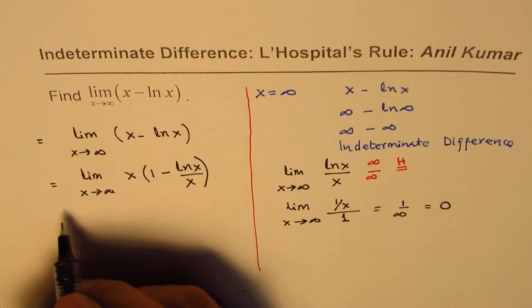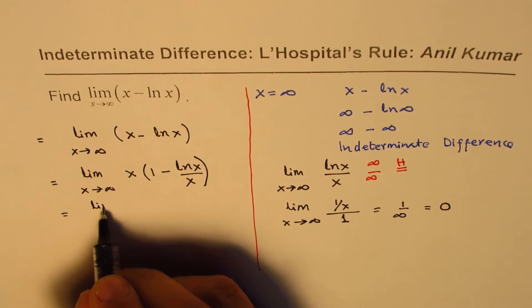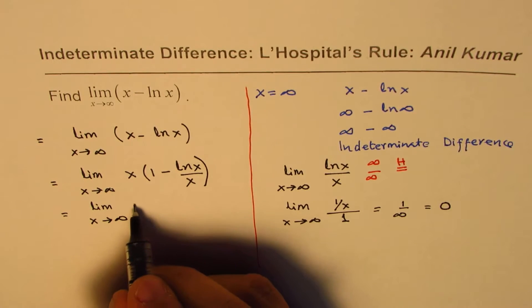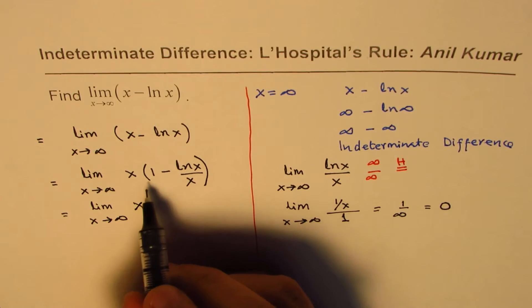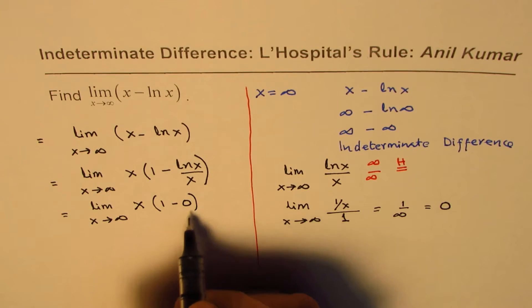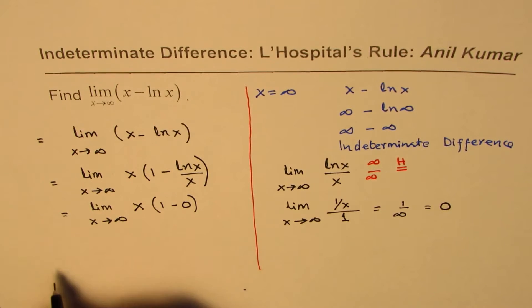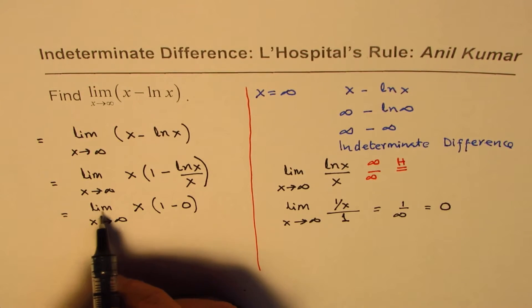We could write this as limit x approaches infinity for x, because we have 1 minus 0. That approaches 0 when x approaches infinity. Basically we have limit as x approaches infinity for x.